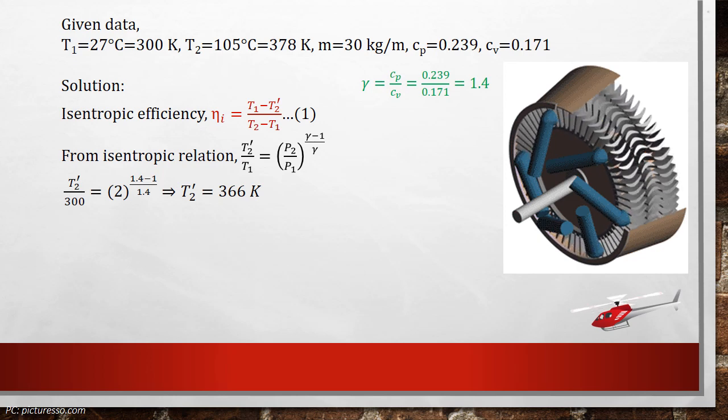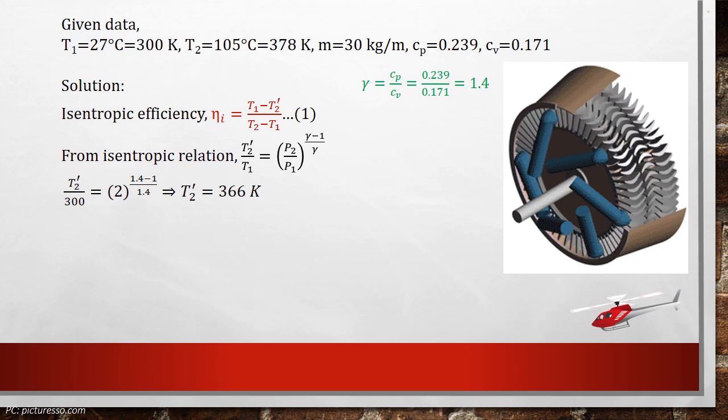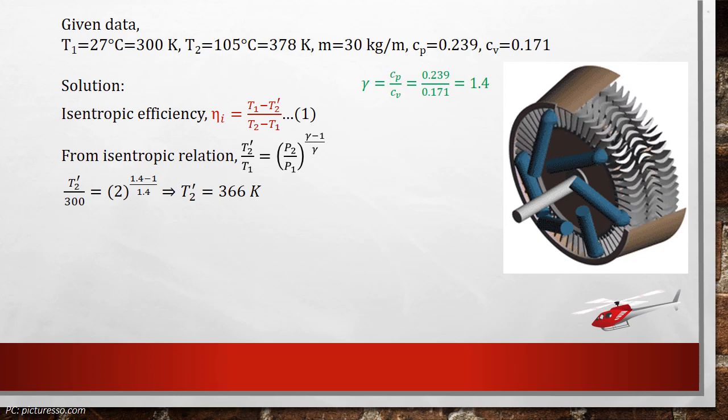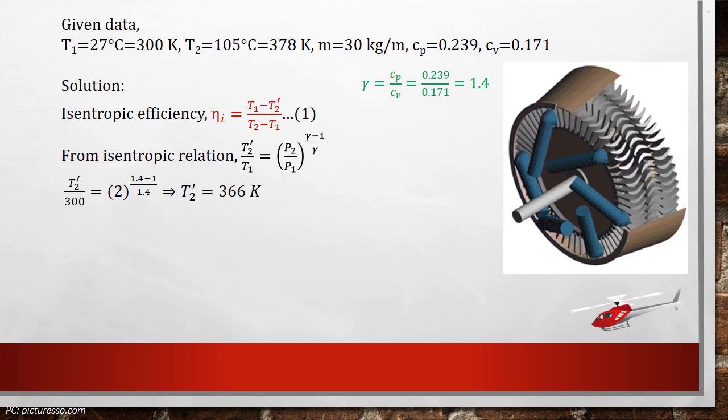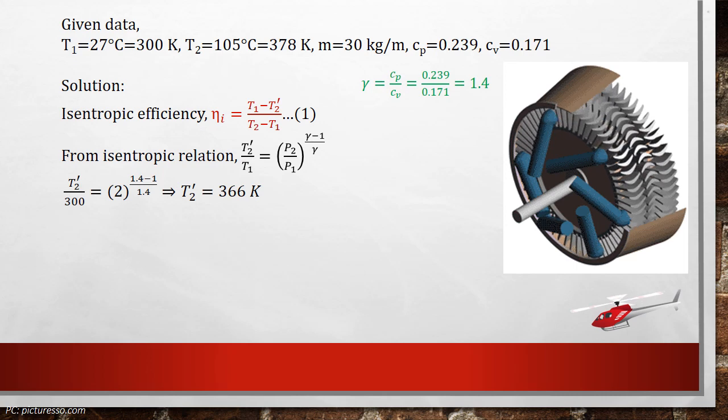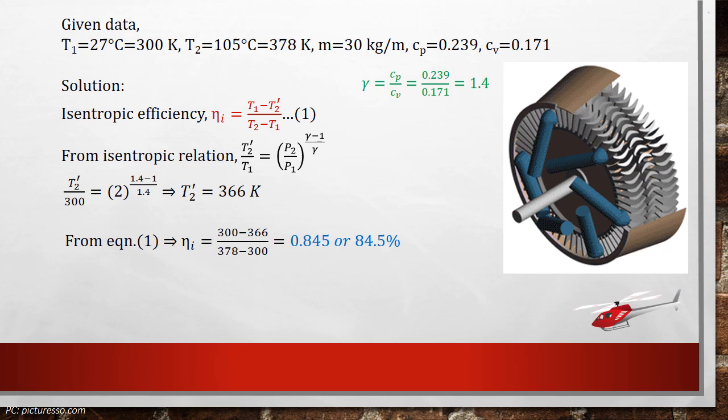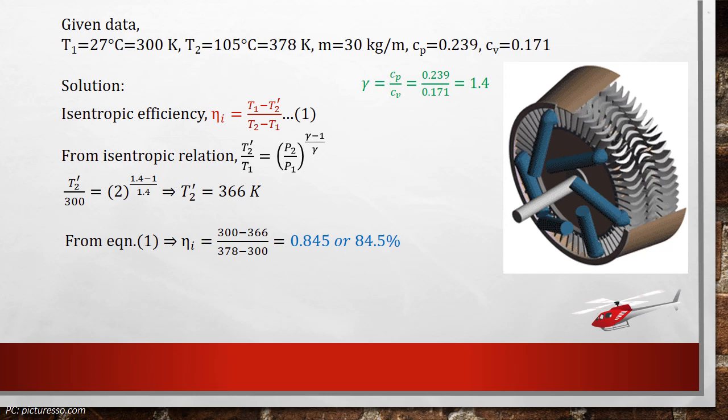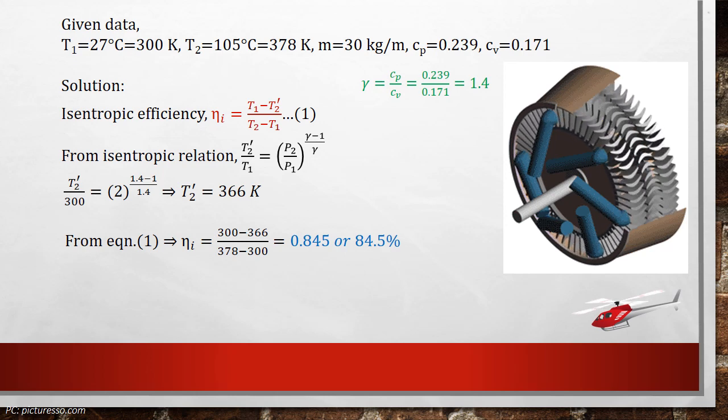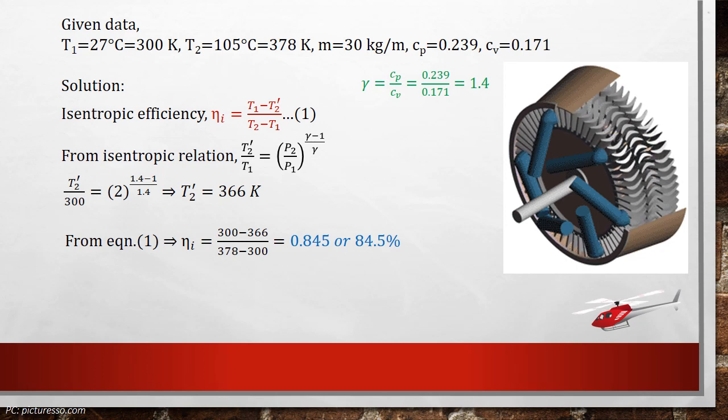Now solve this equation. We get T2' is equal to 366 Kelvin. Now substitute the values in equation number 1 and simplify. We get the required isentropic efficiency is 0.845 or 84.5%.